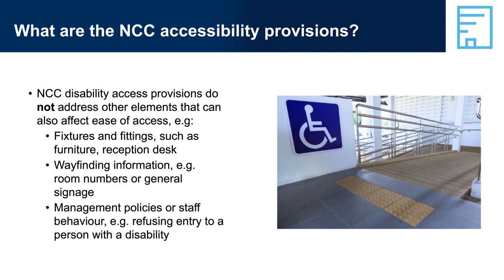It is important to comply with the access provisions in the NCC so that a building is built in such a way as to be accessible to as many people as possible. It is important to note, however, that because Volume 1 applies to a broad range of buildings — for example, commercial, industrial, multi-residential and institutional buildings — some performance requirements may have limited application, generally dependent on the specific building classification; not all requirements apply to all designs.